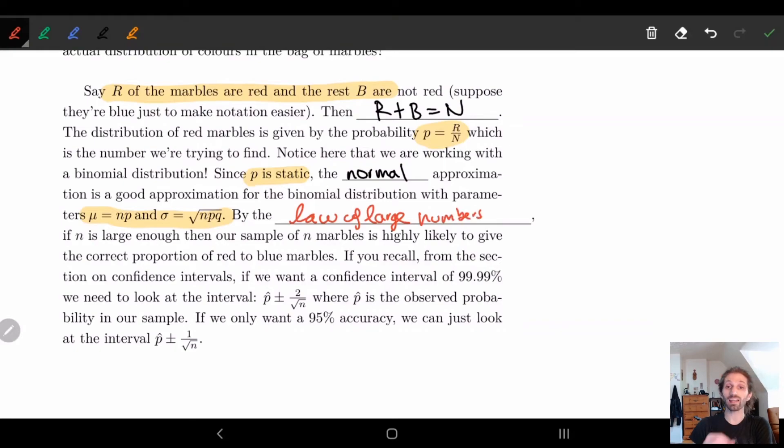What we know is if N is large enough, then we're going to know exactly how many are red and how many are blue. And if you recall our last section on confidence intervals, what we want is, if we want a confidence interval of 99.9%, all we have to do is do this N number of times, and then what we're going to have is some interval, where p hat is going to be the observed frequency. This is our relative frequency, what we see.